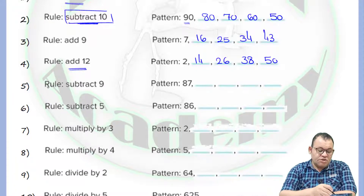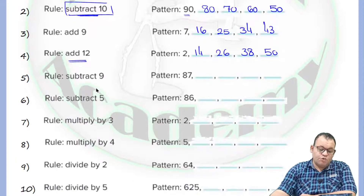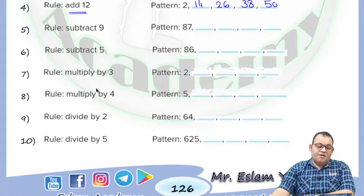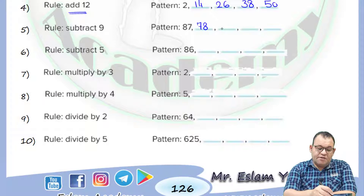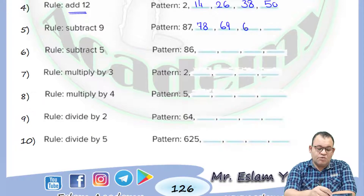In question number 5 we need to subtract 9. If you subtract 9 the answer will be equal to 78. If you subtract 9 it will be equal to 69. By subtracting 9 it will be equal to 60. If you subtract 9 it will be equal to 51.